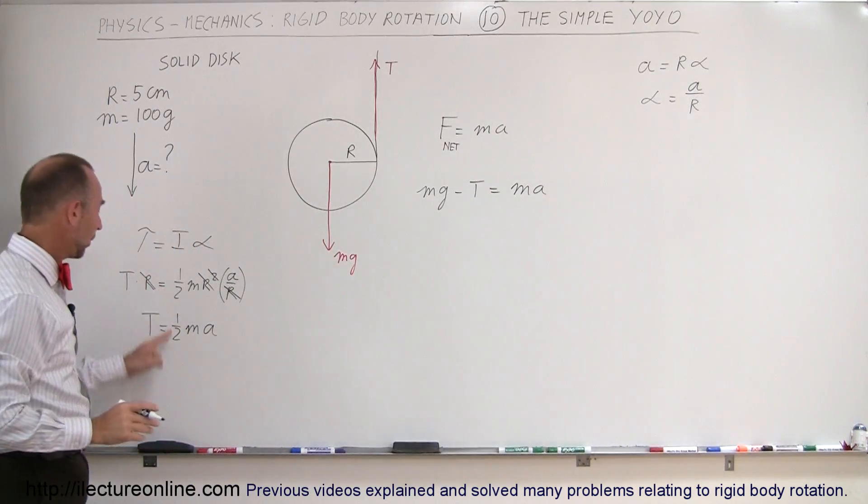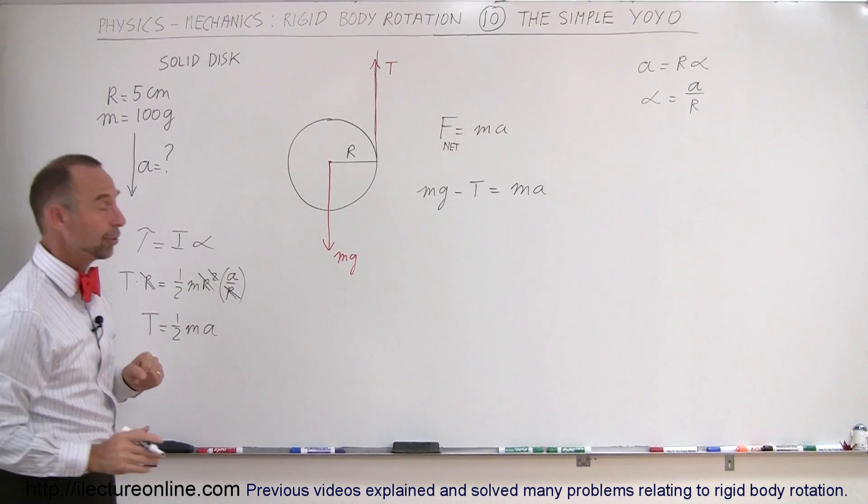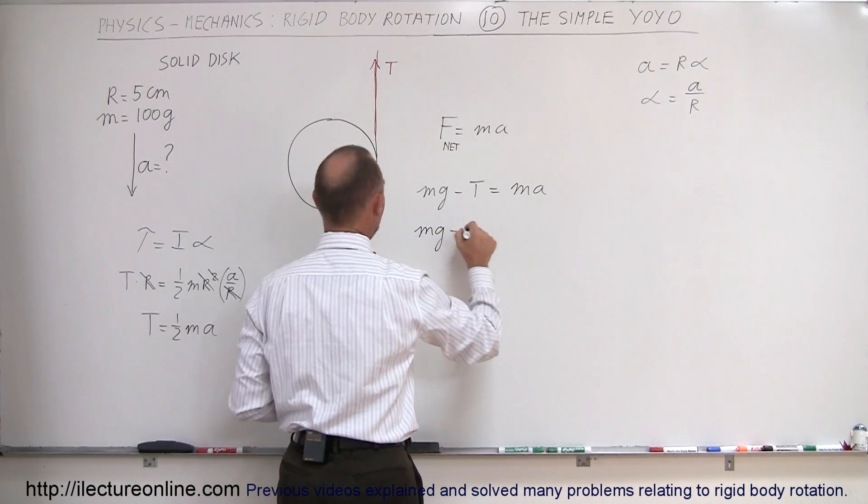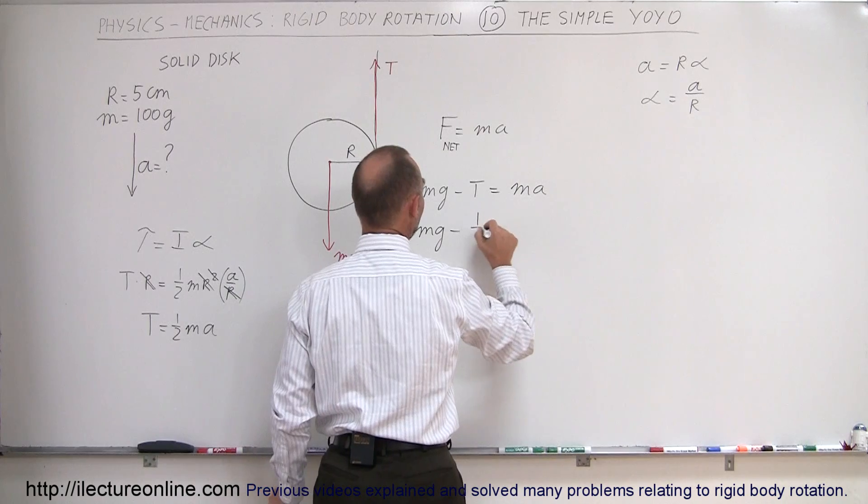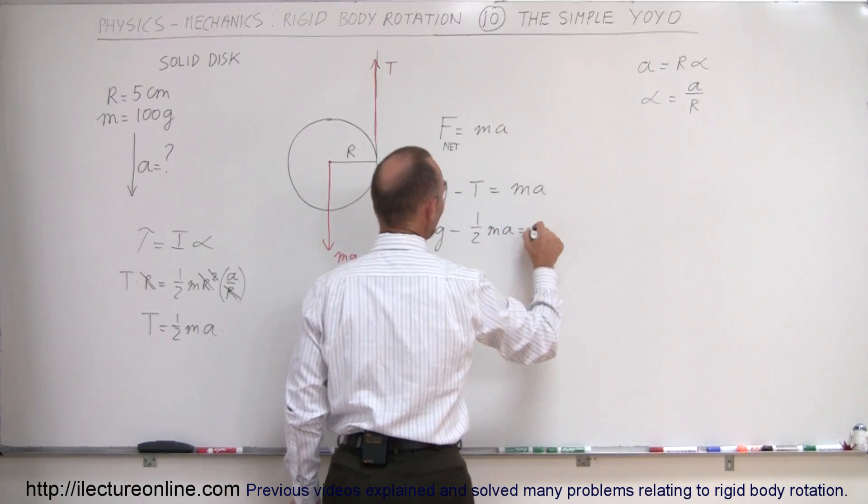Since the tension is expressed as one-half MA, we can plug that in for the equation. So we can write MG minus the tension, which is equal to one-half MA, equals MA.